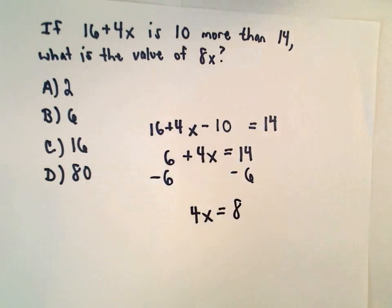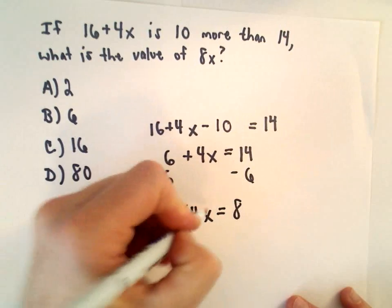I want the value of 8x. Well, I've already got 4x on the left side, so what I'm going to do is just multiply both sides here by 2.